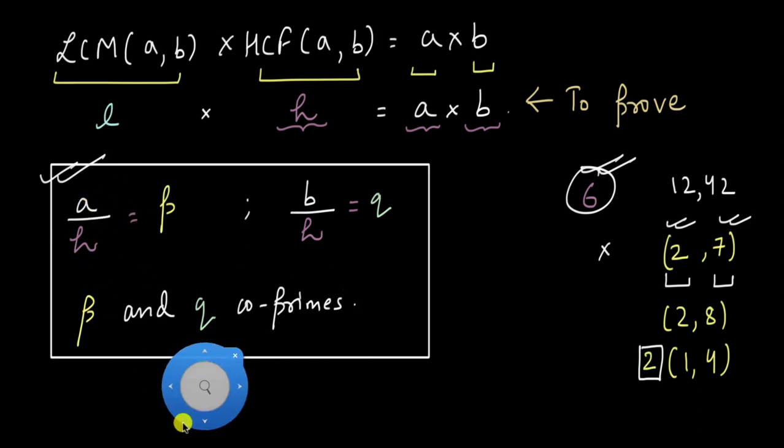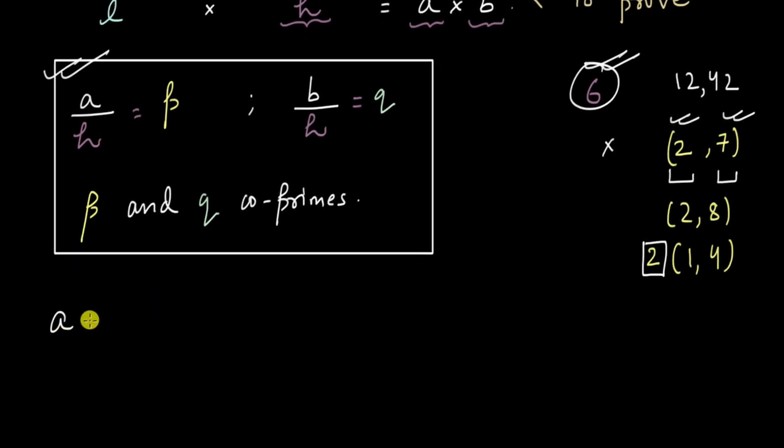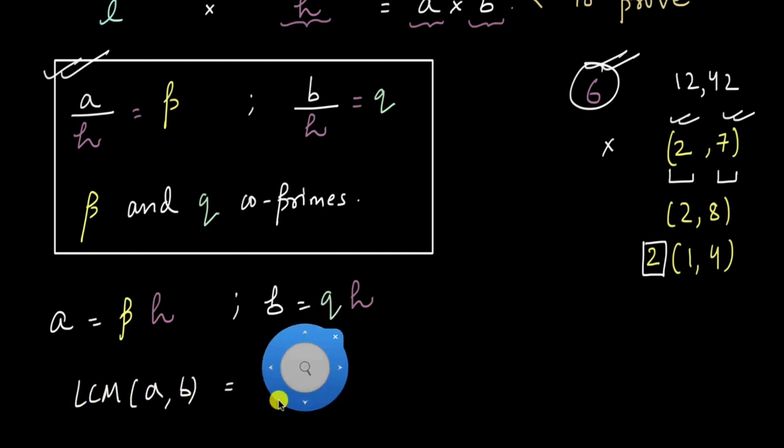Now coming back to the problem at hand we have A is equal to P times H and B is equal to Q times H. Let us now try to find the LCM of A and B. Let us try to find this.